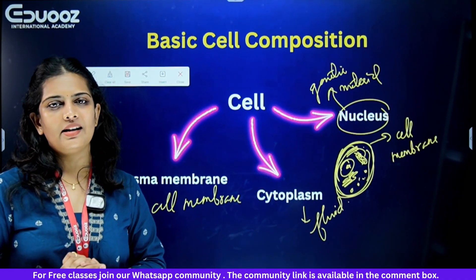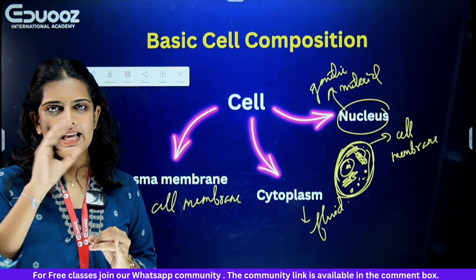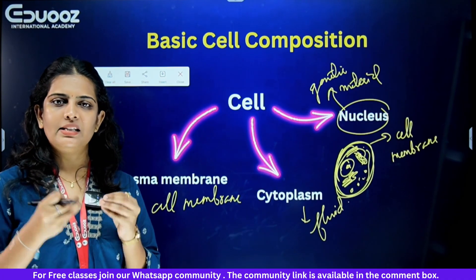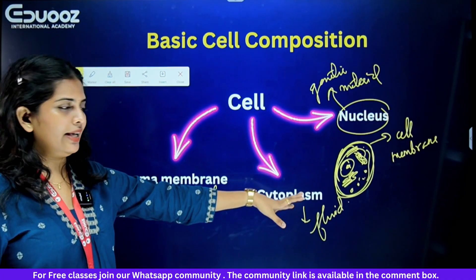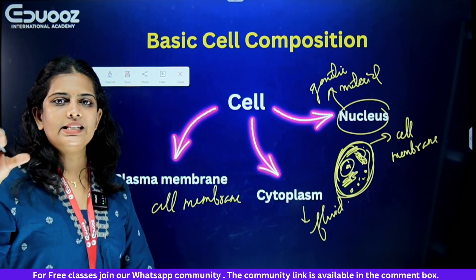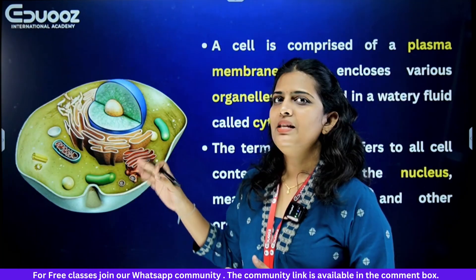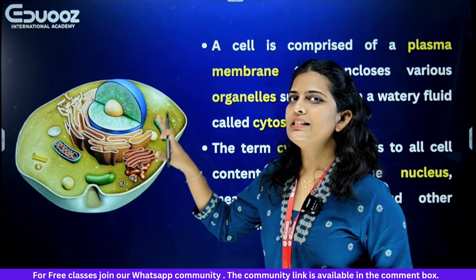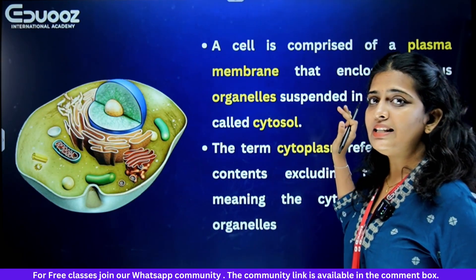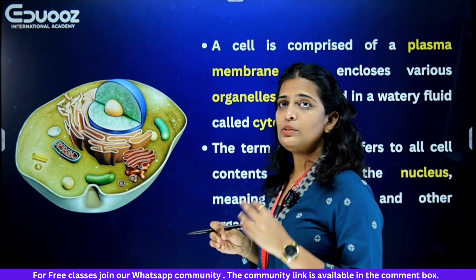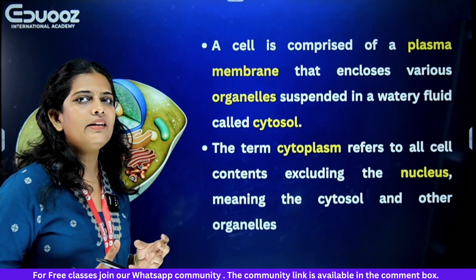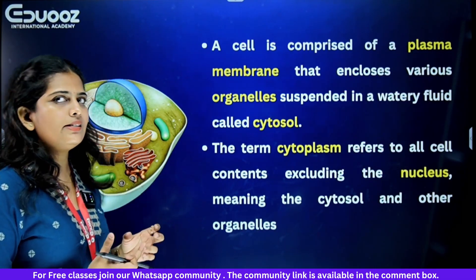There are three components of the cell: the outermost cell membrane, the fluid part — the cytoplasm — and the nucleus. The organelles are suspended in the cytoplasm. A cell is comprised of a plasma membrane that encloses various organelles suspended in a watery fluid called cytosol.